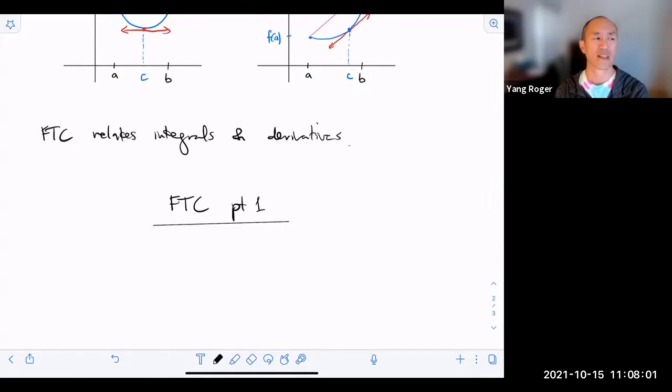Now it should seem really weird that these two things are related. Because the derivative is like an instantaneous rate of change, it's a slope of a tangent line, and an integral that's area under a curve. So they don't seem to have anything to do with each other. But what we're going to see is we're going to see that they do have something to do with each other.